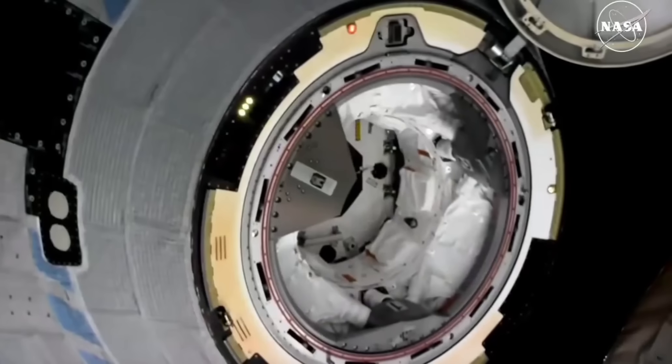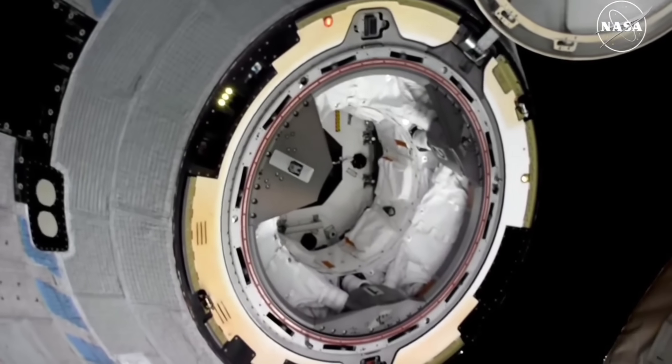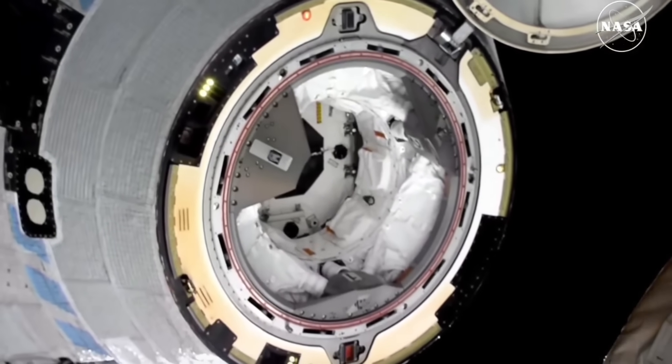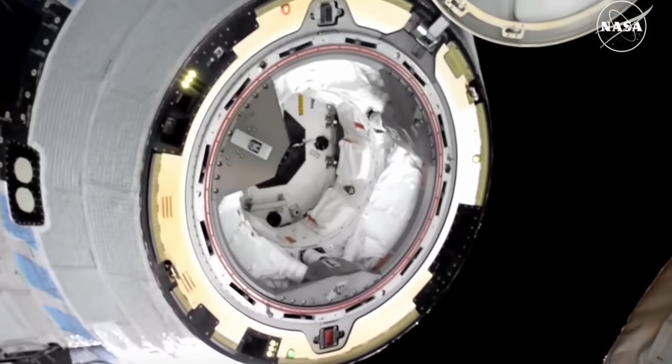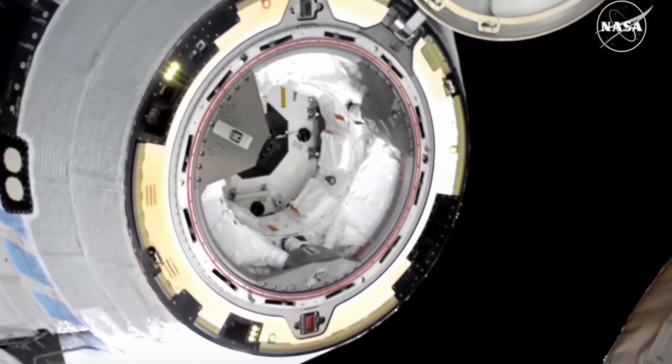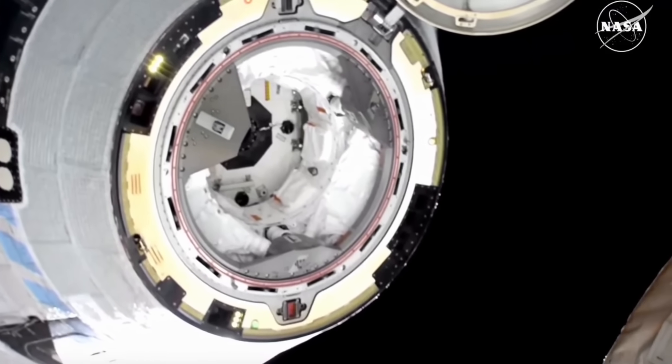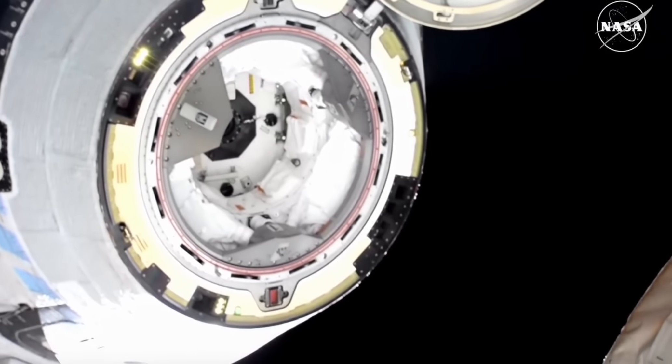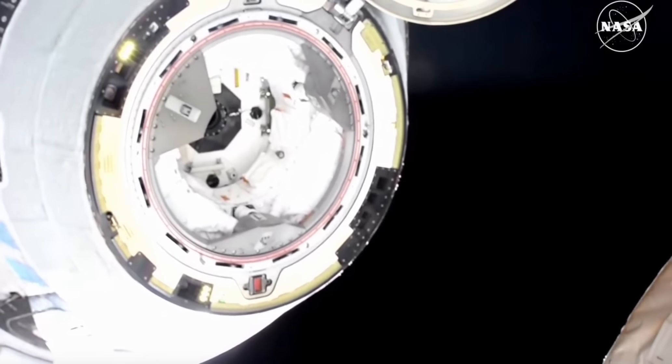Starliner's thrusters will then complete two short firings to gradually increase the separation speed to help the spacecraft carefully move away from the orbiting lab. The vehicle is now about two meters away from the International Space Station. At the time of undocking, Starliner and the International Space Station were flying approximately 260 statute miles over central China.